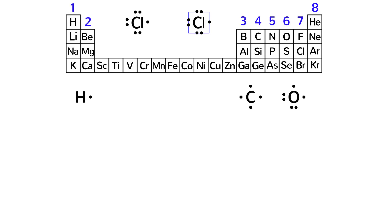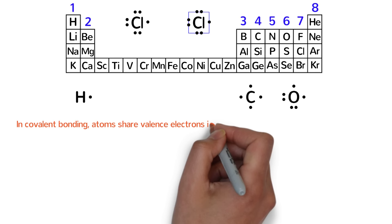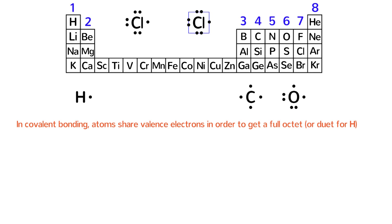Lewis diagrams are often used to represent covalent bonding in molecules and ions. In covalent bonding, atoms share valence electrons in order to get a full octet, or duet. That is, every non-metal element wants eight valence electrons, except for hydrogen, which only wants two valence electrons.